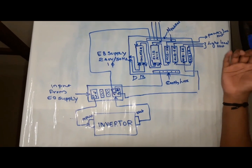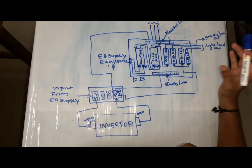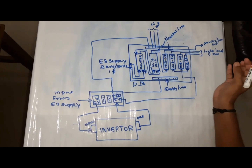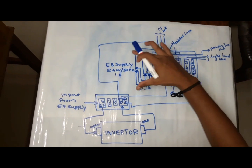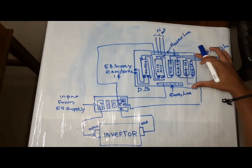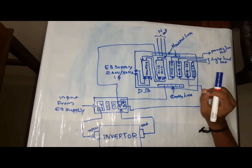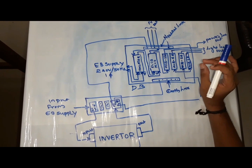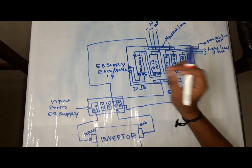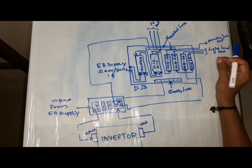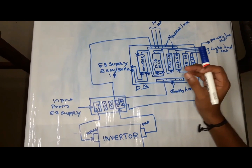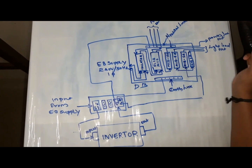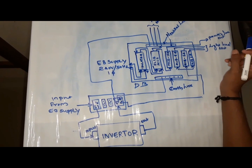We will try to do a schematic diagram. This is a distribution board. In this video, we will add the input to the electricity board and add the input to the inverter.